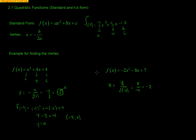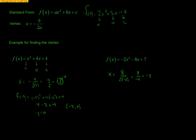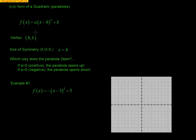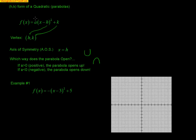One of the things we also work on is having a quadratic in HK form. HK form is nice for graphing because the vertex is right there for you — the vertex comes from the h and the k in the equation. A couple other properties: the axis of symmetry is a dotted line through the parabola where x equals h. Whether the parabola opens up or down comes from the number in front: if it's positive, the parabola opens up; if it's negative, the parabola opens down.